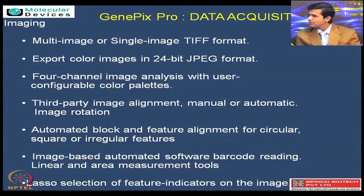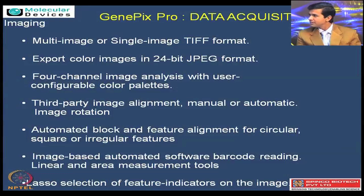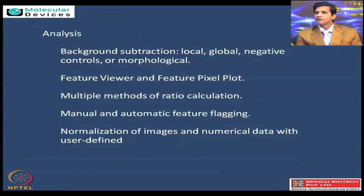Each particular array has different blocks which in turn contain features. These features are the actual genes or proteins, or the representative biological material what you are checking. This has to be aligned with the annotation information, which GenePix Pro does by itself through automation. Automated block and feature alignment is possible; even different sizes and shapes of spots can be handled, right from circular and square to irregular features, which can be handled at the level of image alignment.